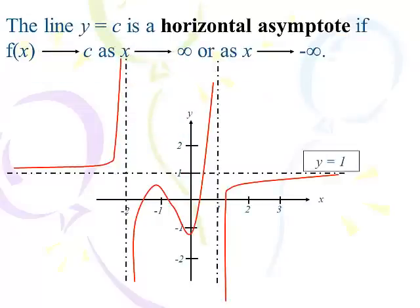Now, horizontal asymptotes. These are the lines y equals something. The line y equals something is a horizontal asymptote if the function approaches that value as x heads out to the right or as x heads out to the left — infinity and negative infinity. Here I have a line y equal 1 as my horizontal asymptote. As the graph enters the page from the left, it's hugging that line, a little bit above. As we leave to the right, it's hugging that line a little bit below. Now in the middle, we can cross horizontal asymptotes — they're not sacred around the y-axis, they are sacred at the extremes. You will not cross a horizontal asymptote out there.